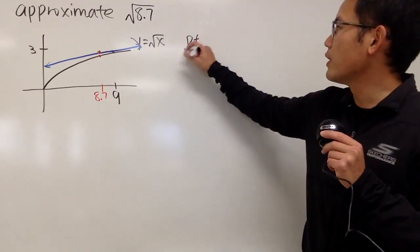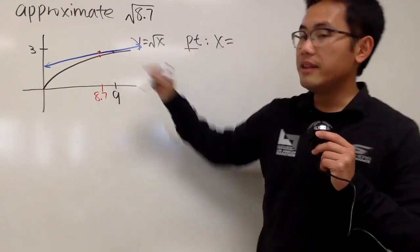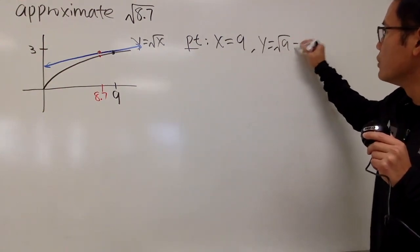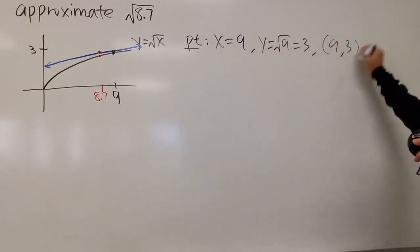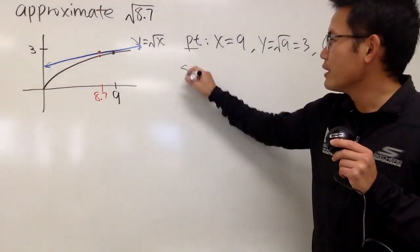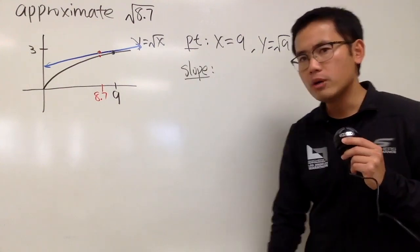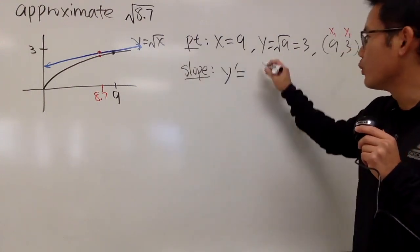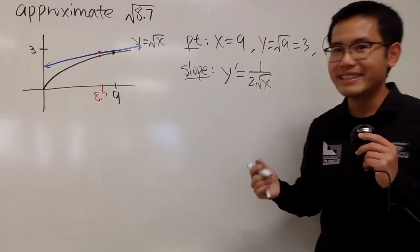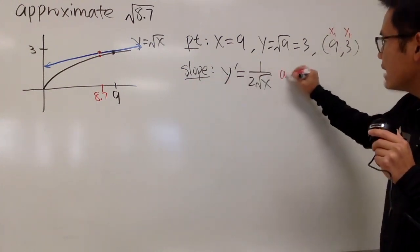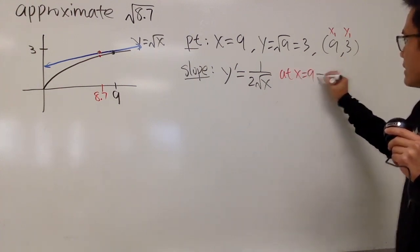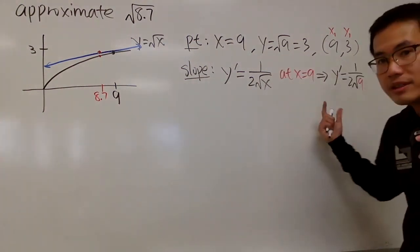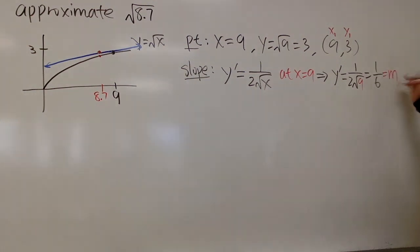What we need is two things. First of all, the point — x is equal to 9, that's the original point we know. When x is 9, y is equal to square root of 9, which is 3. So the point is (9, 3), that's (x₁, y₁). Now let's find the slope. The slope is of course just the derivative. The derivative of square root of x is 1 over 2 square root of x. Plugging in x equals 9, we get y' equals 1 over 2 square root of 9, which is 1 over 6. And this is the slope.